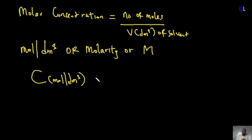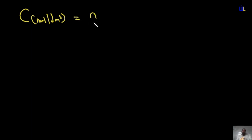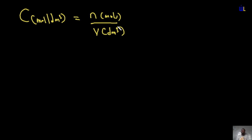There are four formulas for finding molar concentration. The first is used when the solute is given in moles (n) and the solvent is a volume in dm³: molar concentration = number of moles ÷ volume in dm³. For example, 2 moles of HCl in 2 dm³ of water gives 2 ÷ 2 = 1 mol/dm³.